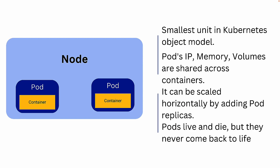Before we start, let me give you a brief introduction about pod. I have a dedicated video where I've covered the basic concepts of Kubernetes. I'll share the link in the description of this video as well as the top right corner. It's highly recommended that you go and check that out. So in Kubernetes, a pod is basically the smallest and simplest unit in the object model for deploying your application.